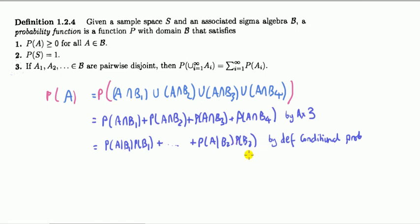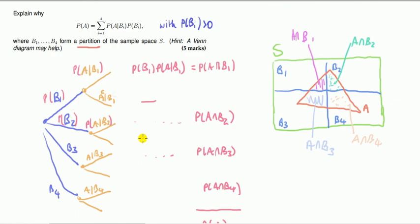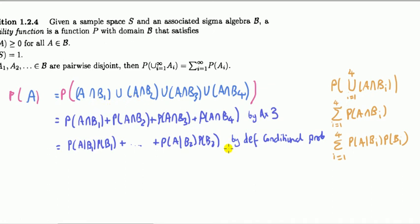This holds with an important caveat: the third line requires that the probability of each event Bi is bigger than zero, because probability of A given B equals probability of A and B divided by probability of B only when probability of B is bigger than zero — otherwise you'd be dividing by zero. Also, if you wanted to tidy up the proof, you can rewrite the first line more compactly; the second line can be written with the sum sign, and the final expression can also be written more compactly with the sum sign, which was actually in the original question.